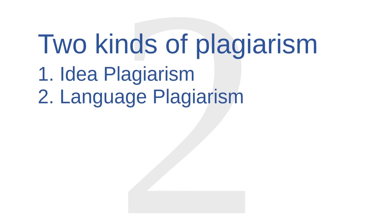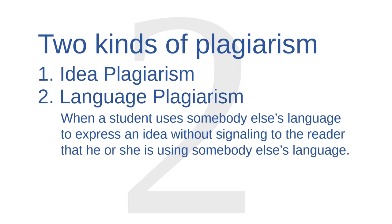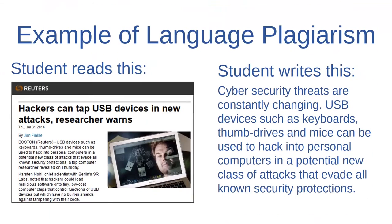The second kind of plagiarism we'll talk about here is language plagiarism. Language plagiarism occurs when a student uses somebody else's language to express an idea without signaling to the reader that he or she is using somebody else's language. Here's an example. Notice that in this example, the student has copied a sentence from the original article word for word. Readers of the paper might think that the student wrote this sentence himself, but he didn't write it himself — he copied it from somewhere else.